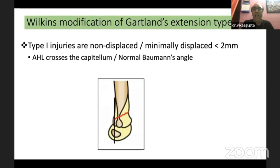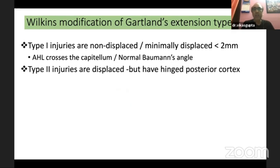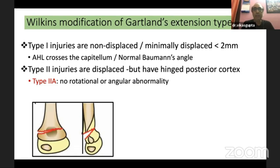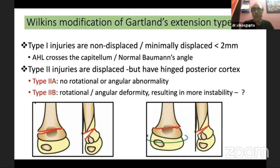This over-simplistic classification was modified by Wilkins. Type 1 injuries are non-displaced or minimally displaced, less than 2mm, and the anterior humeral line crosses the capitulum — not necessarily bisecting it — with a normal Baumann's angle. Type 2 injuries are displaced with a hinged posterior cortex, subclassified as type 2A with only posterior translation and no rotational or angular abnormality, and type 2B with rotational and angular deformity, resulting in more instability if managed conservatively. Some authors classify type 2B as type 3.